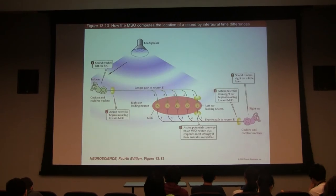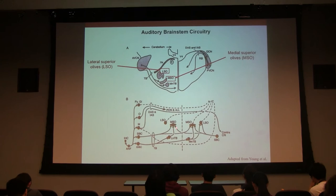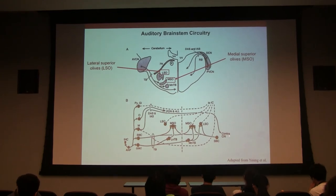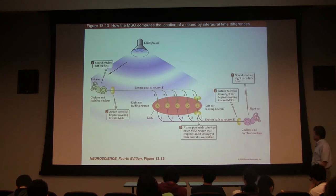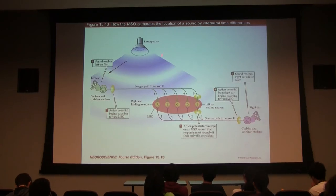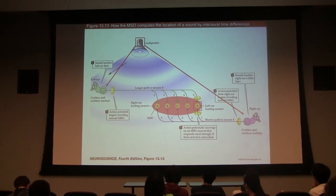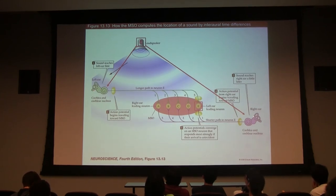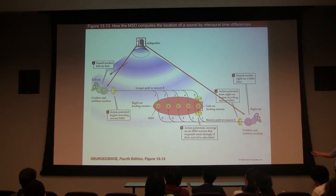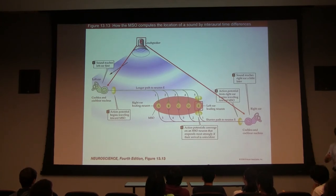In the MSO, neurons receive inputs from both ipsilateral and contralateral ears, mostly excitatory. Suppose there's a loudspeaker to the left — sound enters the left ear first because it's shorter, then the right ear with a longer path. When the sound arrives, hair cell transduction produces action potentials traveling along the auditory nerve. The conduction velocity of action potentials matters here — whether it's 30 meters per second or 3,000 meters per second affects how timing works in this circuit.